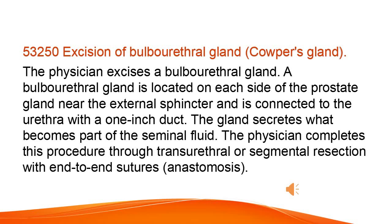Excision of Bulborethral Gland. The physician excises a bulborethral gland. A bulborethral gland is located on each side of the prostate gland near the external sphincter and is connected to the urethra with a 1-inch duct. The gland secretes what becomes part of the seminal fluid. The physician completes this procedure through transurethral or segmental resection with end-to-end sutures, anastomosis.